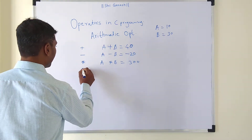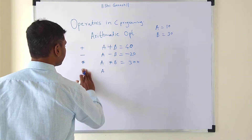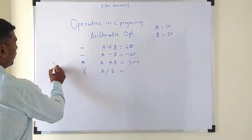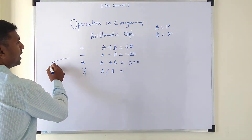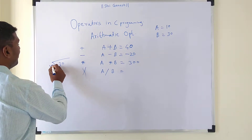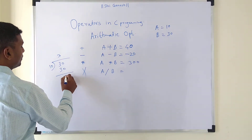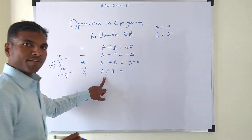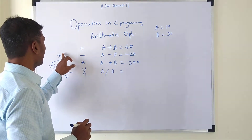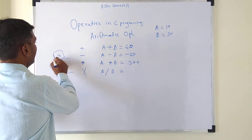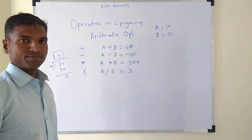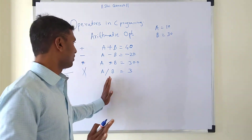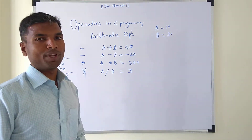The next operator is called the division operator. So if a divided by b — as we know, if the value of b is 10 and a is 30, so 30 divided by 10 gives us 3 as the answer. Whenever we are going to do the division, this quotient part will be the answer. That is called the division operator. Again this is not a unary operator — a minimum of two operands are required for performing the operation.